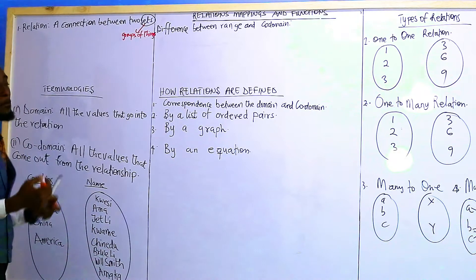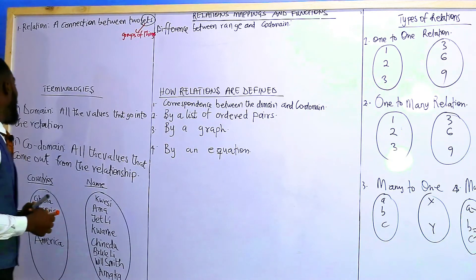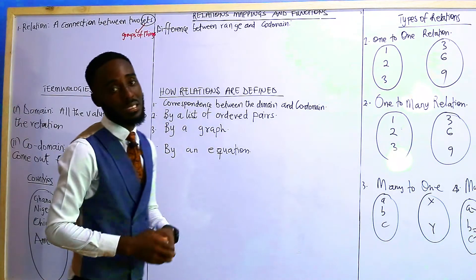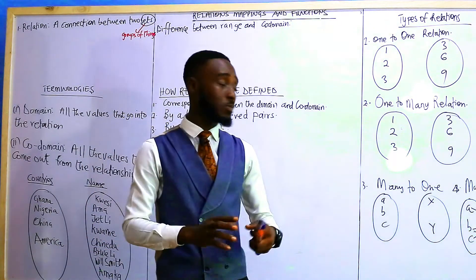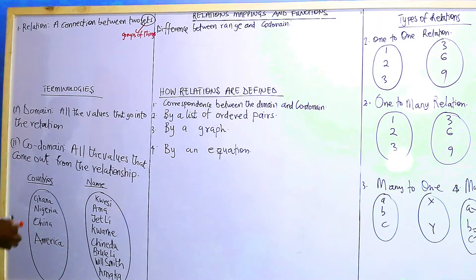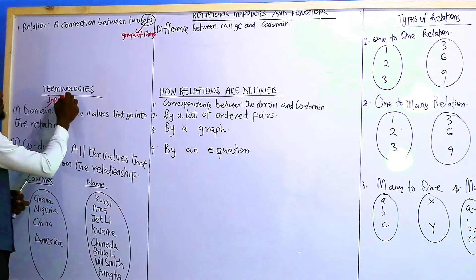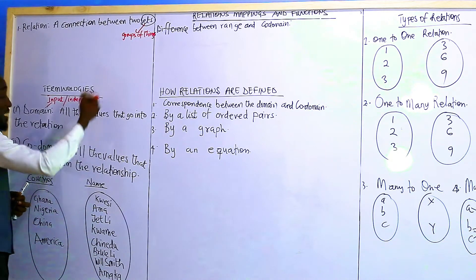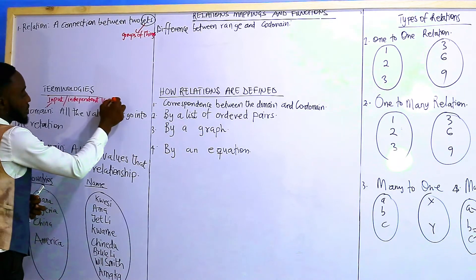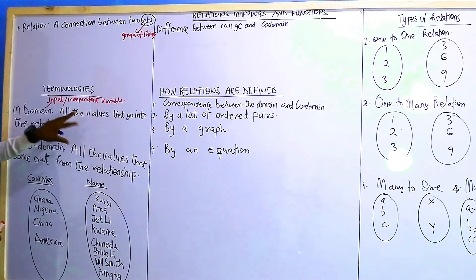One word stands out here: a set is just a collection of numbers or groups of things. So you could have a set of numbers, a set of nouns, a set of many other things. Mathematically, we have some important terminology useful for our understanding of relations. The first one is called the domain — the domain is also called the input or the independent variable. All the values that go into the relation are called the domain.